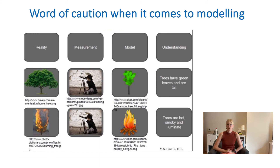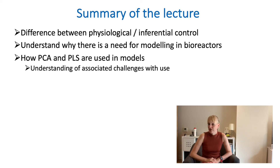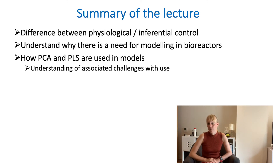Artificial intelligence helps us to speed up processes and makes it easier to process data, but we should also be very aware of the drawbacks. To summarize this lecture: first, the difference between physiological and inferential control — you would want to use inferential control simply because it's much easier. Second, why there's a need for modelling in bioreactors — because these processes are very complex and you can't control every single parameter. What modelling does is compress your data to just the essence: the key design parameters you need to keep in mind to maintain consistent product quality.